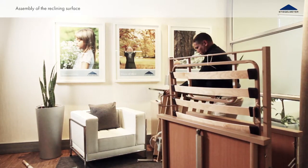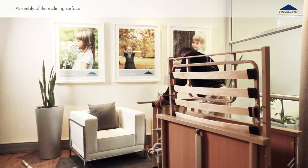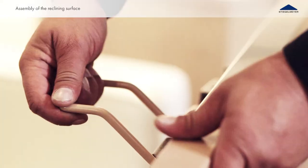Put the head side half of the reclining surface frame horizontally on the floor. The two sockets pointing upwards, fold the backrest away from the bed frame.